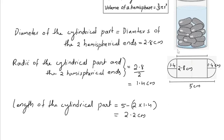Let's find the volume of one gulab jamun. The sum of the volumes of these two hemispherical ends and the cylindrical part makes the volume of this one gulab jamun.